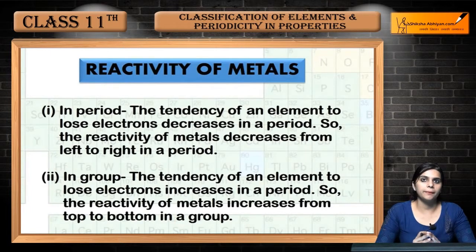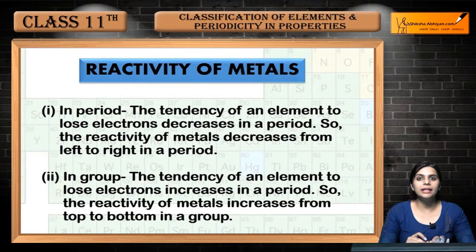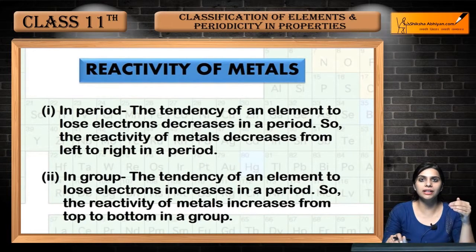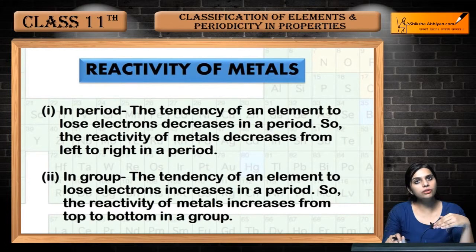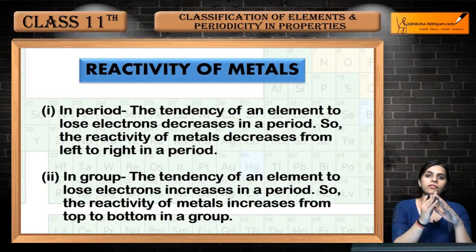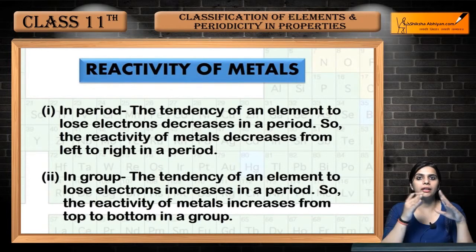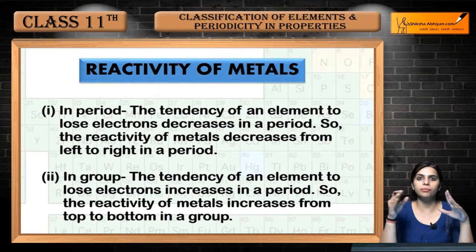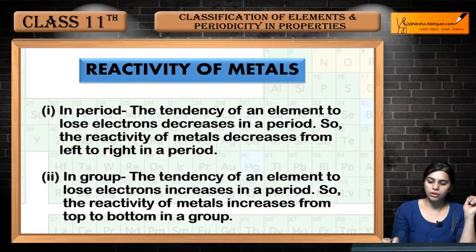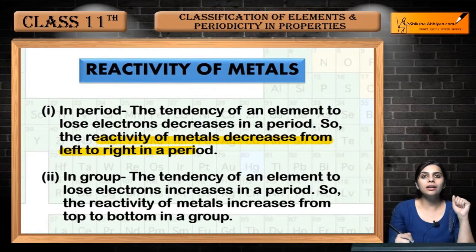Metals lose electrons. When they lose electrons they will be reactive, but when we move left to right in a period, as the tendency to lose electrons decreases, the reactivity will also decrease. So the reactivity of metals decreases from left to right in a period.